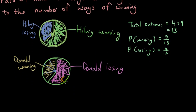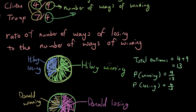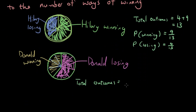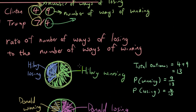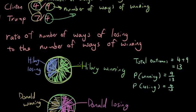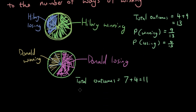And then for Donald, again, you got total outcomes. His total number of outcomes is seven plus four, which is 11 outcomes. There are four ways that he could win. So probability of winning is four out of 11. And the probability of him losing is seven out of 11.